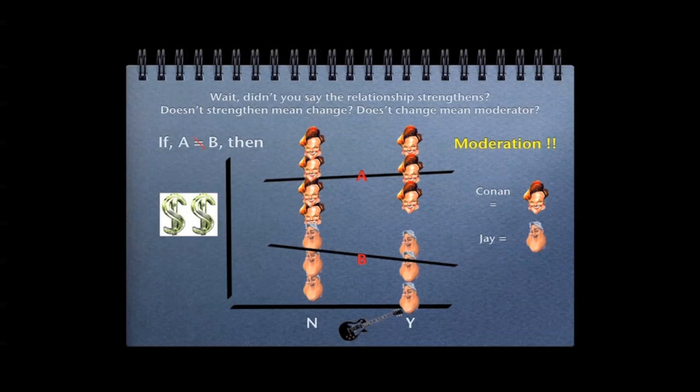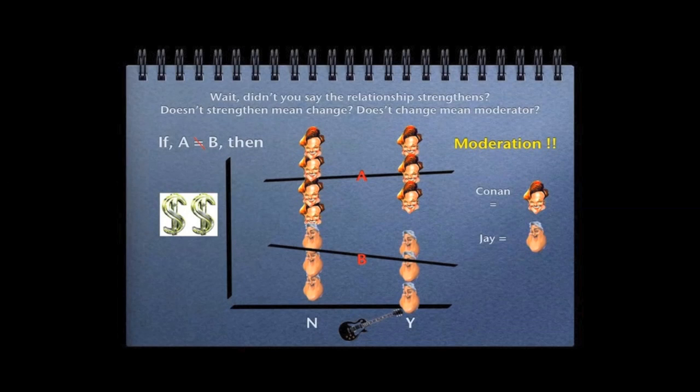So it could be said that when A does not equal B, in this case A and B equaling slopes, you have a significant moderator.